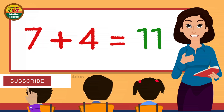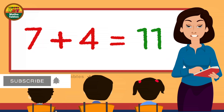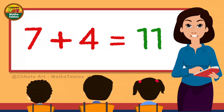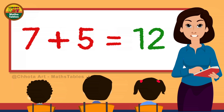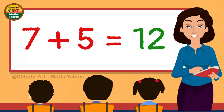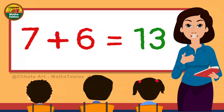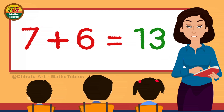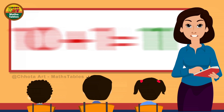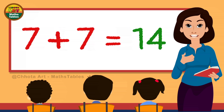7 plus 4 is 11. 7 plus 5 is 12. 7 plus 6 is 13. 7 plus 7 is 14.